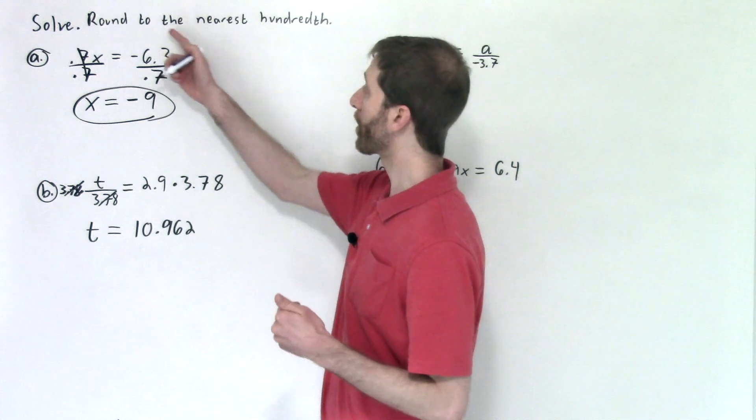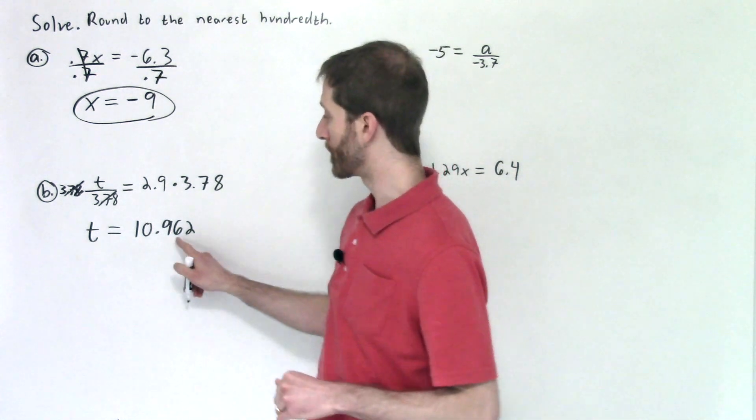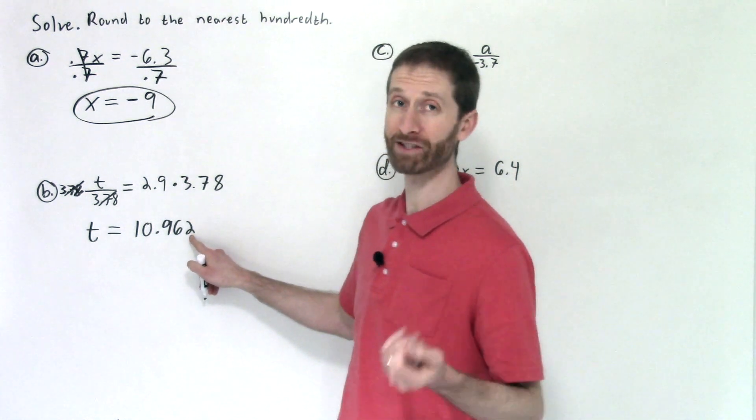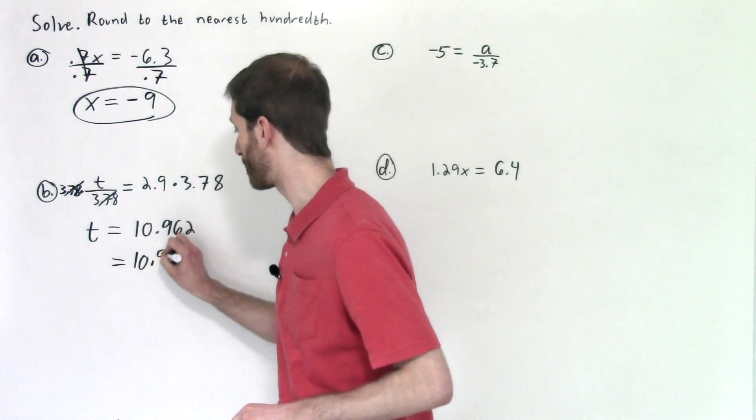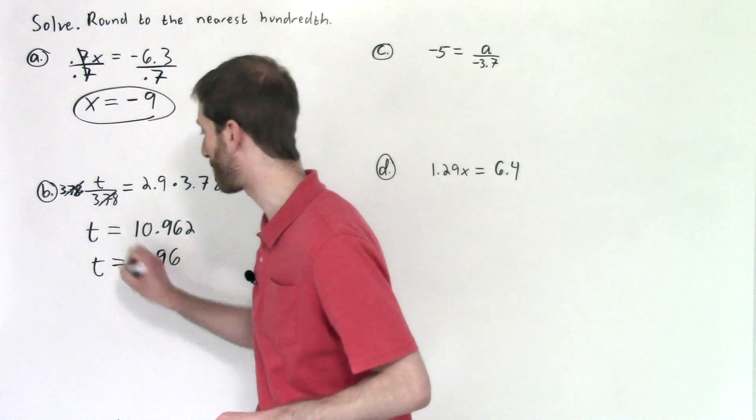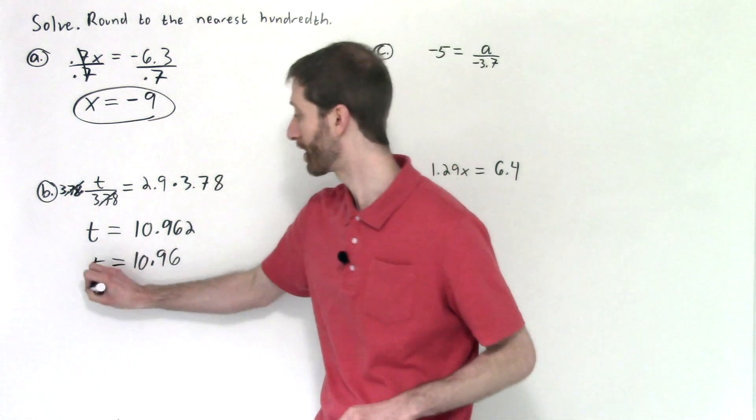Now we were asked to round our answers to the nearest hundredth. So in this problem, since this number in the thousandth place is a 2, we would round down to 10.96. And that, my friends, is your answer right there.